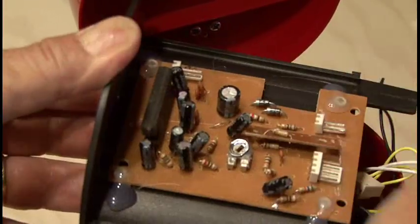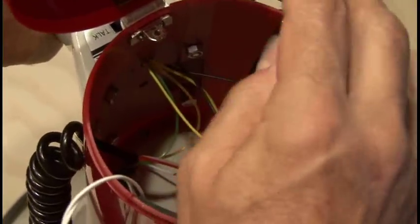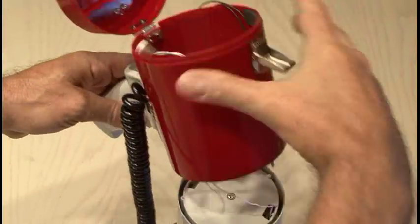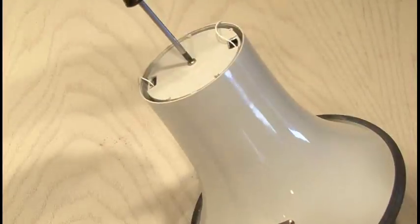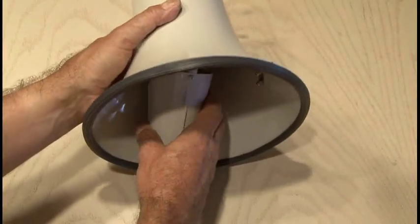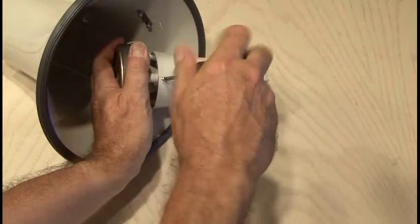Then there are three screws that hold the rear half of the megaphone to the horn. Those need to come out as well. Then remove the one small bolt that holds the speaker assembly in place. When that's free, you can remove the screws that hold the cone over the speaker.